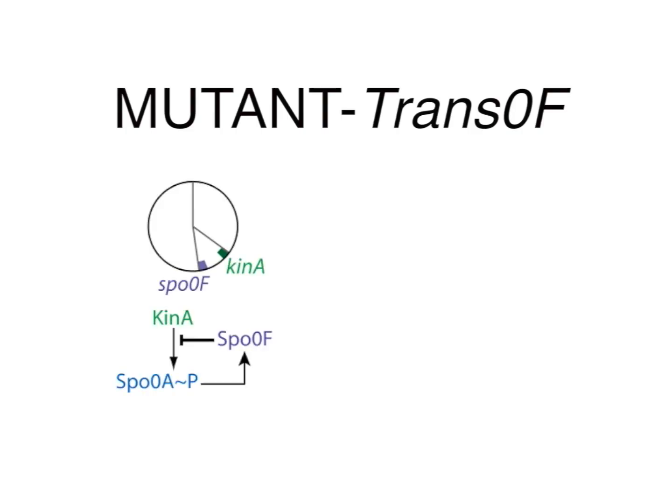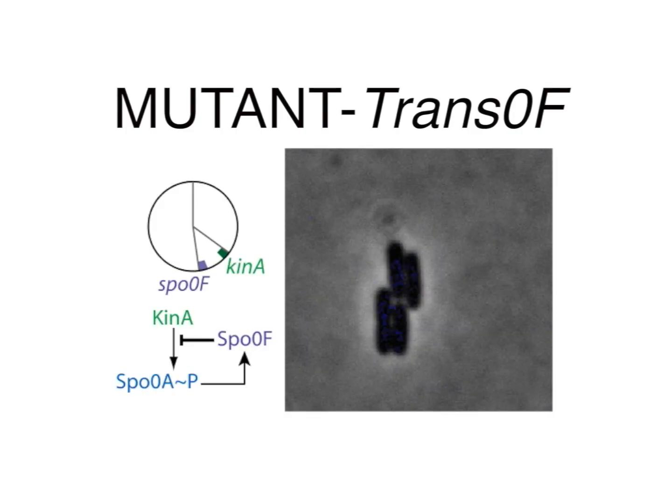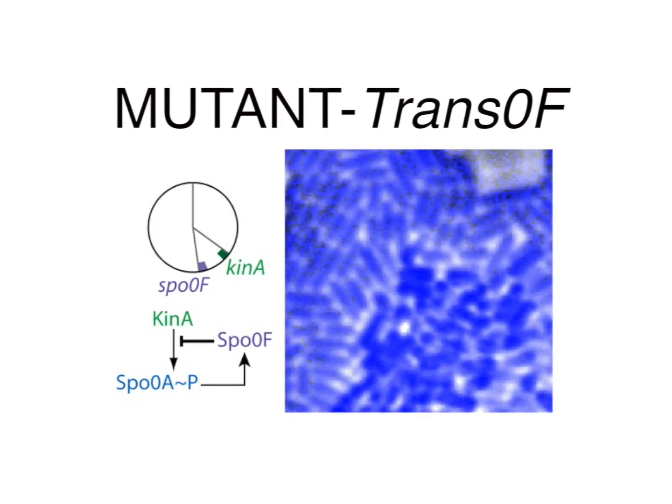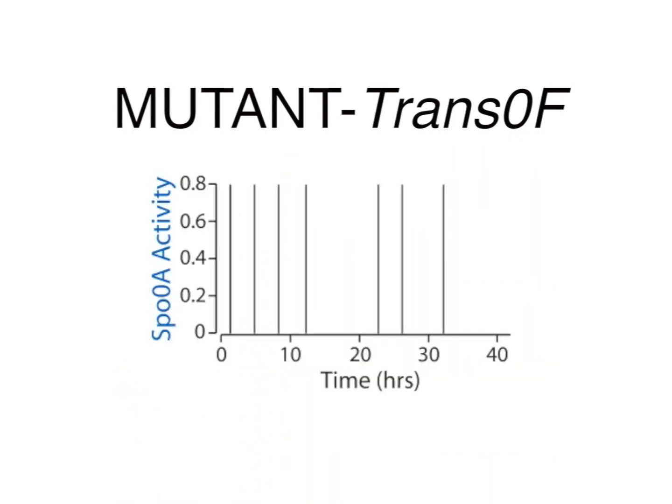Next, we engineered a strain in which we moved the location of Spo0F gene in the chromosome, so that it is replicated together with kinase. As a result, pulsing is lost and sporulation is greatly diminished.